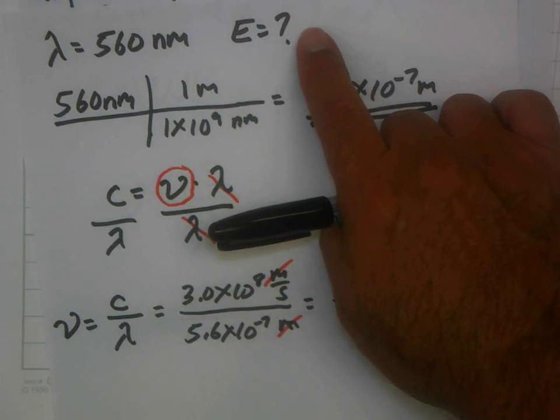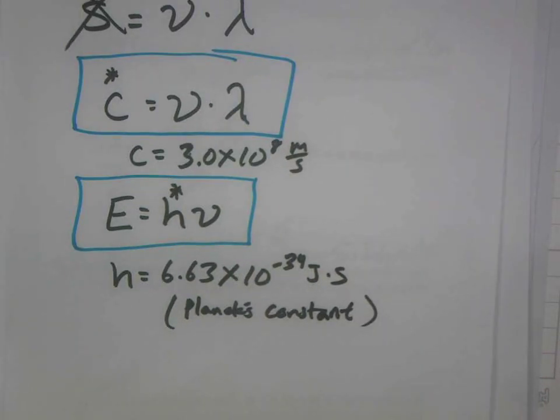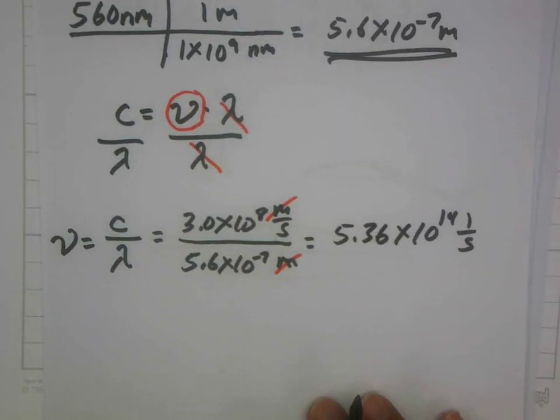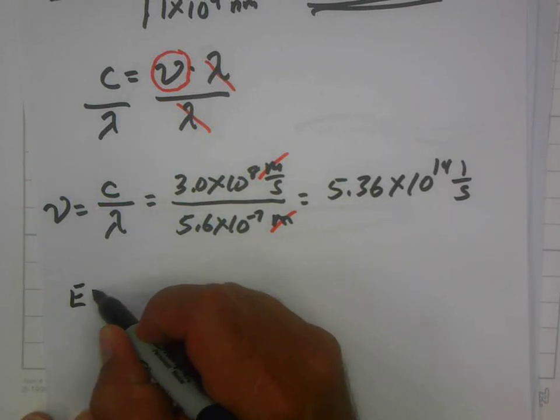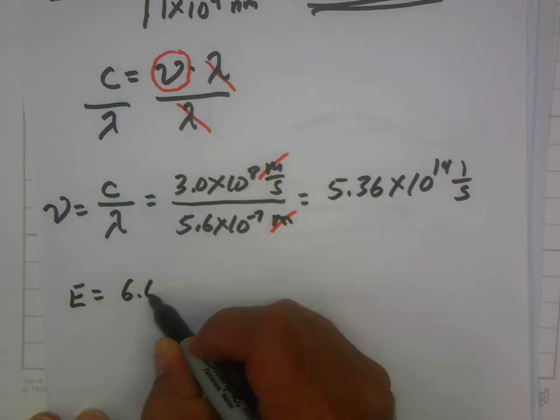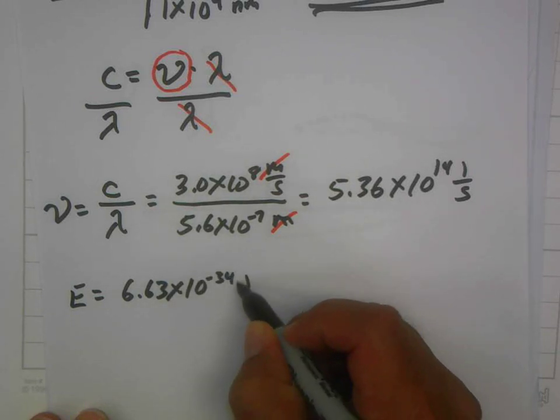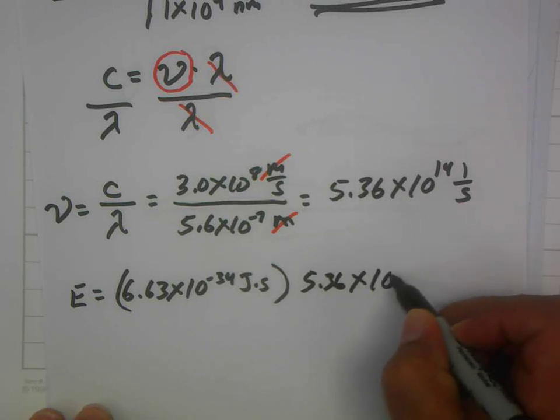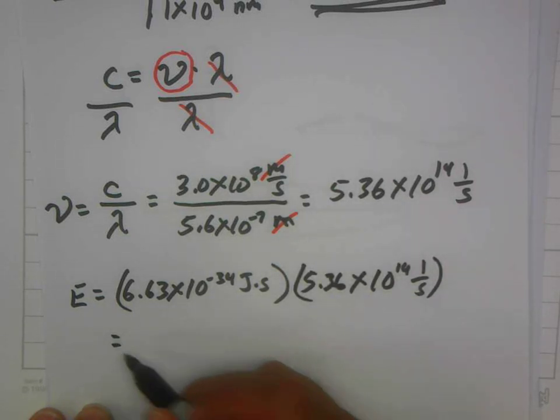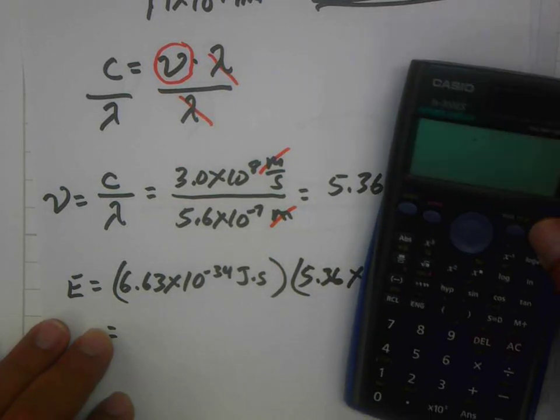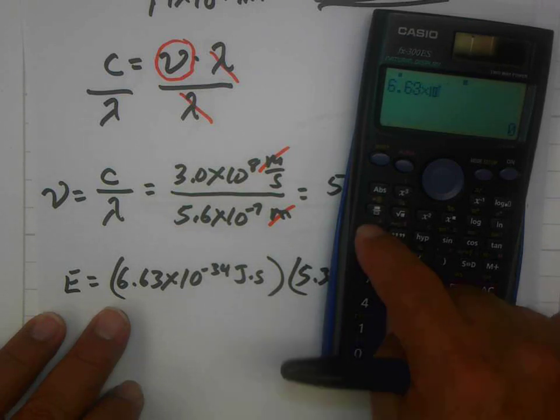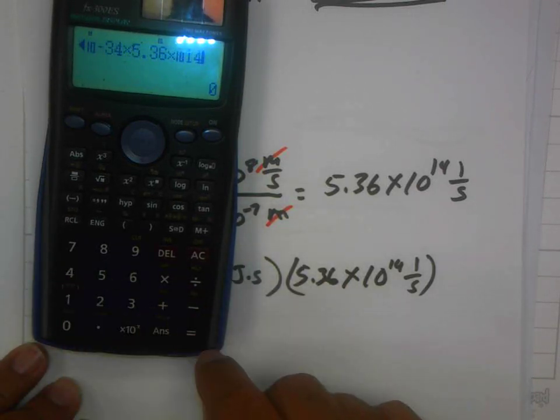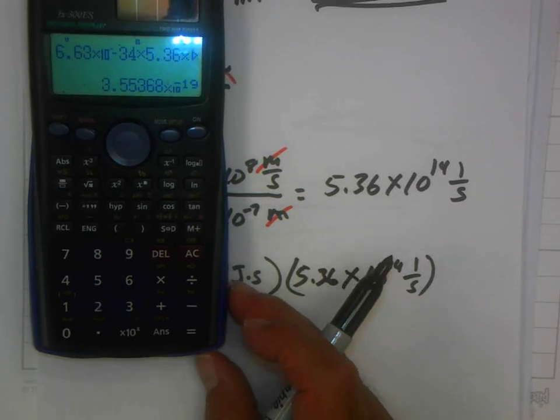We're not done yet, though. Remember what we're looking for? We're looking for energy. And we have this other equation. Energy is H times frequency. And here's our H. So just like we did in the first question, all we have to do is take our frequency and multiply it. So let's do the energy equals to Planck's constant, 6.63 times 10 to the minus 34th joules times seconds. That's your H. And then your frequency, 5.36 times 10 to the 14th per second. So that's 6.63 times 10 to the minus 34th, multiplied by 5.36 times 10 to the 14th, and that gives you 3.55 times 10 to the minus 19th joules.